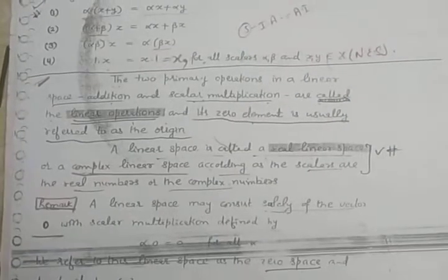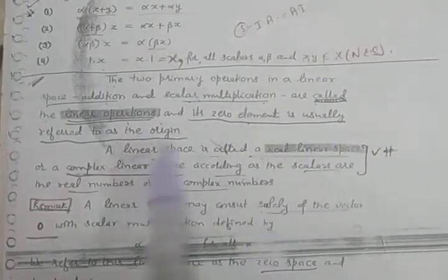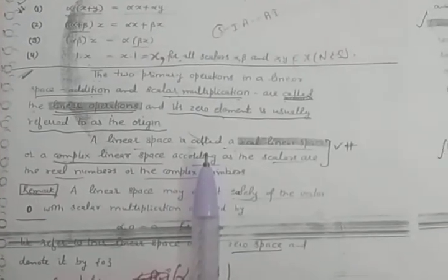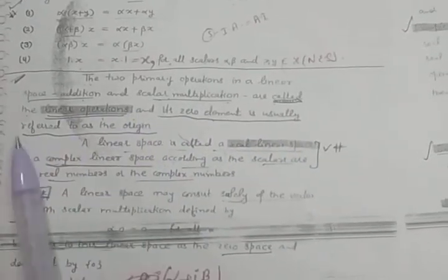The two primary operations in a linear space — addition and scalar multiplication — are called the linear operations, and the zero element is usually referred to as the origin. So in a linear space, we have two primary operations: addition and scalar multiplication, both called linear operations, and the zero element is referred to as the origin.